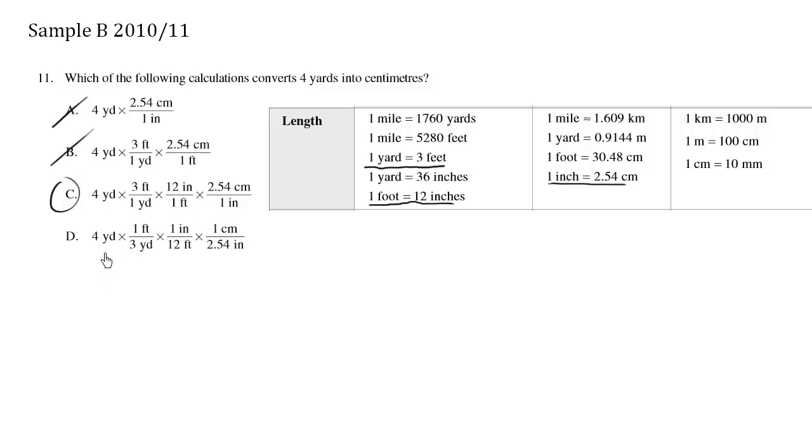Choice D, we have the 1 foot per 3 yards, which is correct over here. So the yards cancel out, we get feet. And we have 1 inch per 12 feet. That's wrong. Clearly, 1 inch is not the same thing as 12 feet, so this is incorrect.